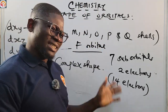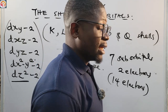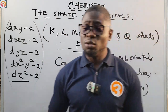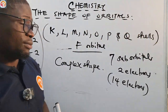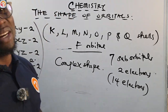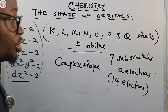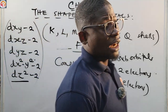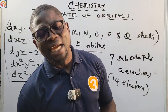Now we've covered the shapes of the orbitals and the number of electrons each can accommodate, as well as their sub-orbitals. This is very important — one mark questions on this topic are very common and are very simple. If you don't know it, you don't know it, so please make sure you learn these.